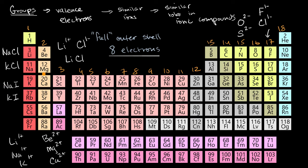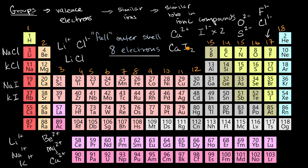What kind of ionic compounds might be formed with group two elements? Take calcium, for example. It's not unreasonable for calcium to lose two electrons to have a stable outer shell — an electron configuration like argon. So if it loses two electrons, it has a positive two charge. Those two electrons could go to two different iodine atoms, each gaining a negative one charge. So you could have one calcium and two iodines, forming calcium iodide. It has a neutral charge overall because calcium has a positive two charge and each iodine has a negative one charge, and there are two of them.